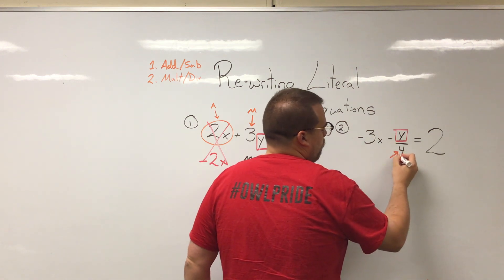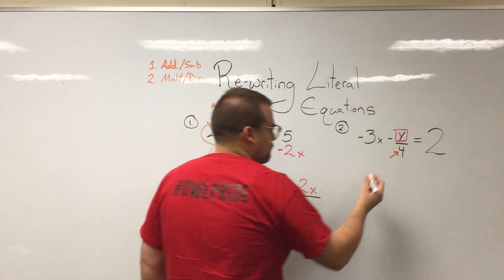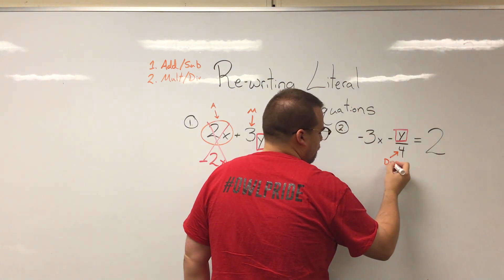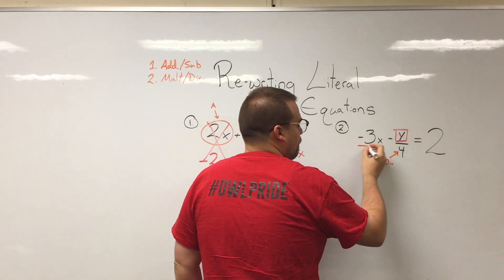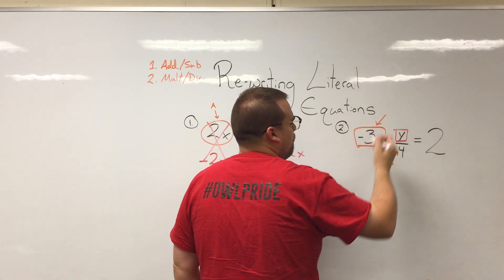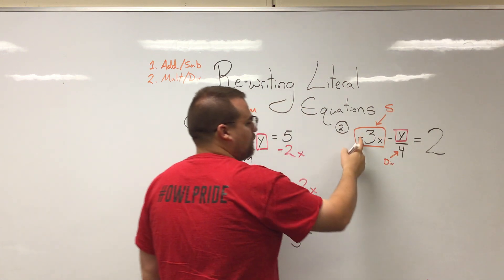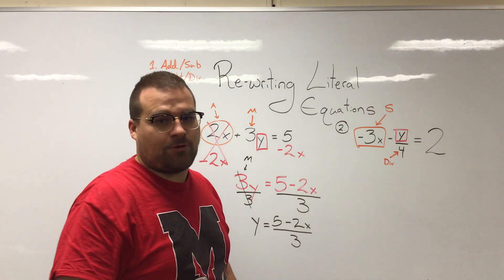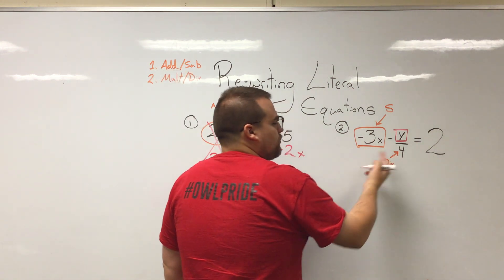Well what is this 4 doing to the y? Well it is dividing, right? What is, and again remember we can look at this as an entire unit, the 3x doing to the y? It is subtracting, hence the minus sign. So I need to get rid of these two things.